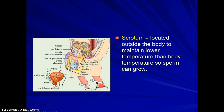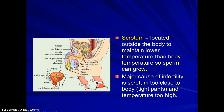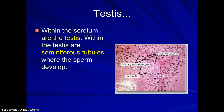The scrotum is located outside the body because sperm will not develop at body temperature — they need to be 3 to 4 degrees cooler. A major cause of infertility in males is that the scrotum is too close to the body from wearing too tight pants, making it too warm for sperm to develop. The testes are within the scrotum, and this is where sperm production occurs, specifically within the seminiferous tubules.